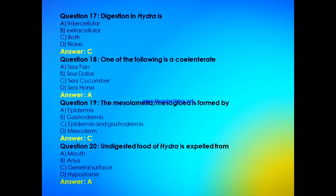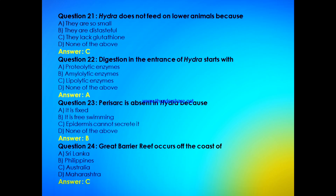One of the following is a Coelenterate — sea fan, sea dollar, sea cucumber, or sea horse? The answer is A, sea fan. The mesolamella or mesoglia is formed by — epidermis, gastrodermis, both epidermis and gastrodermis, or mesoderm? The answer is C, that is both by epidermis and gastrodermis.